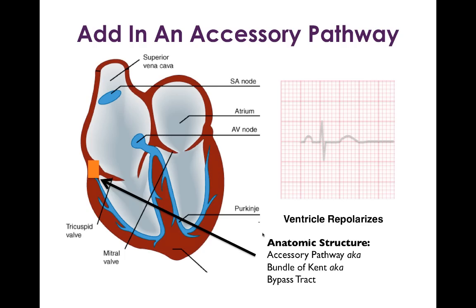The other important thing to recall is the order of conduction speed of various tissues. The His-Purkinje system conducts very rapidly. Ventricular or atrial myocardium conducts less rapidly. Since the accessory pathway is similar to atrial or ventricular myocardium, it conducts at about that same speed. Slowest of all is the AV node and the SA node — their job is to slow conduction. So the AV node is slower than the accessory pathway.